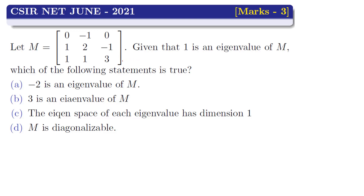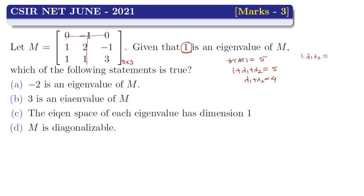In this question we have a 3×3 matrix M. Since it is a 3×3 matrix we have 3 eigenvalues. We can use the trace of M, which is 5. One eigenvalue is already given as 1, so lambda_1 plus lambda_2 equals 4. The product of eigenvalues equals the determinant.